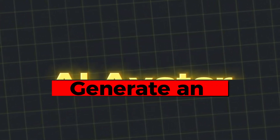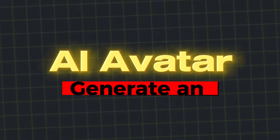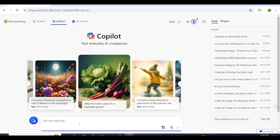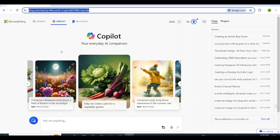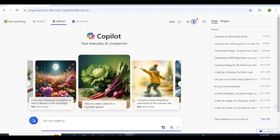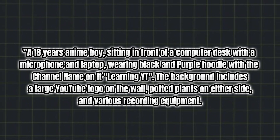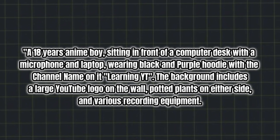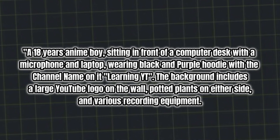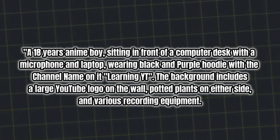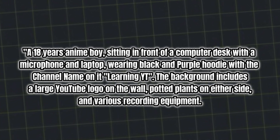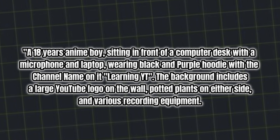Generate an AI avatar. First, go to bing.com and open Copilot AI. Here you will see the Ask Me Anything section. Paste this prompt here, which I'll give you in the description. You can customize the prompt as per your needs, such as changing the name of your channel or the theme.